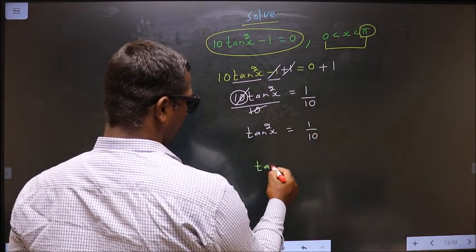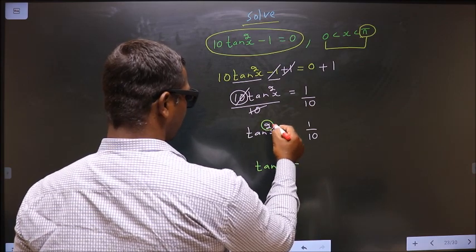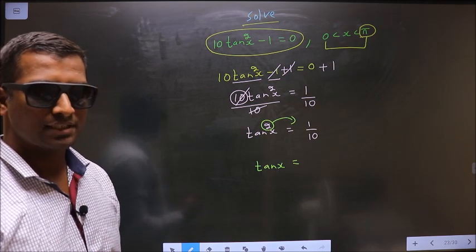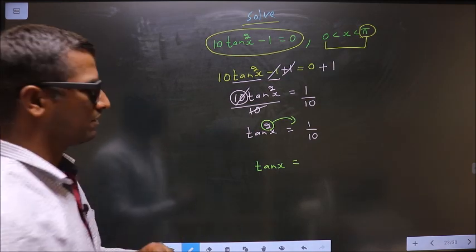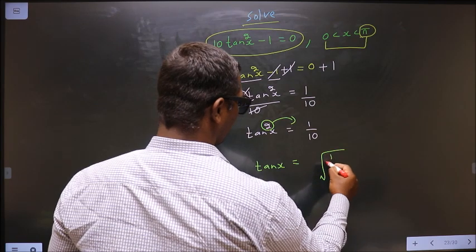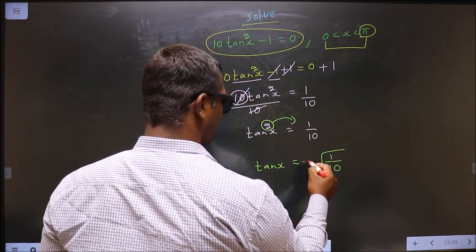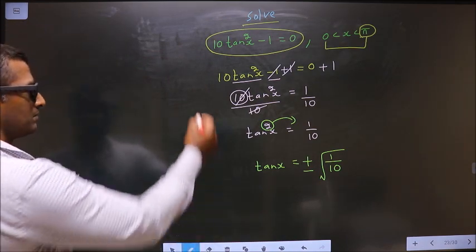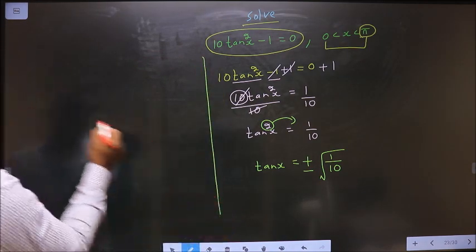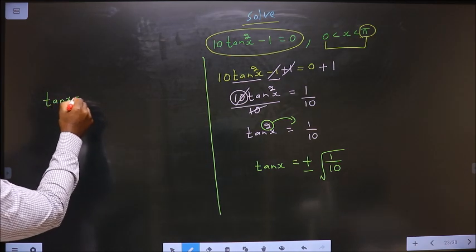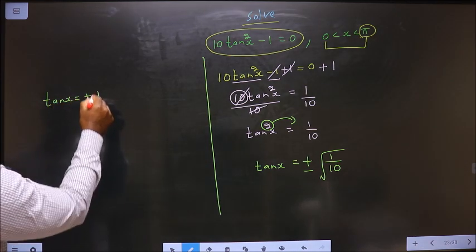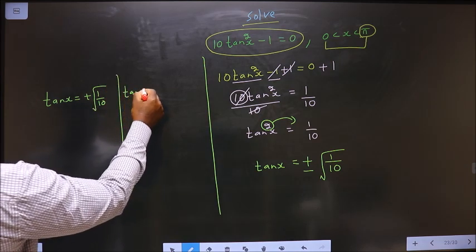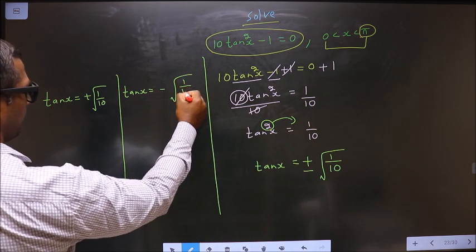Now to get tan x we should shift square to the other side. So when we shift square to the other side it will become square root. Not only that, you should consider both positive and negative as well. Now we have tan x = √(1/10) and tan x = -√(1/10).